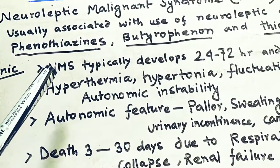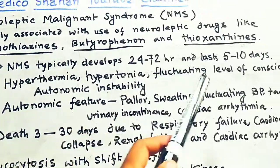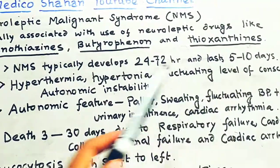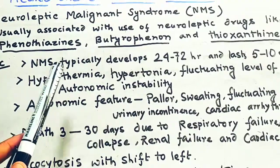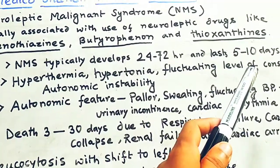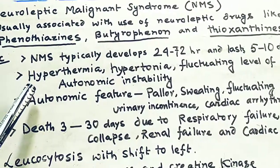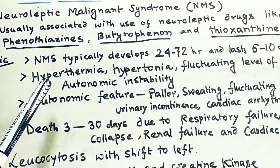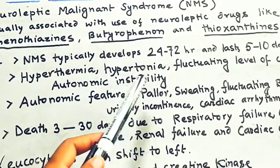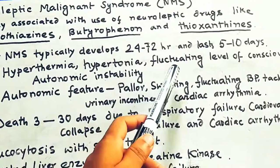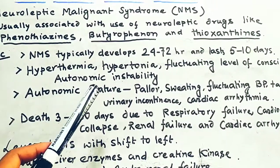In the clinic, NMS typically develops within 24 to 72 hours and can last from 5 to 10 days. The patient presents with typical symptoms like hyperthermia — an increase in temperature — hypertonia in the muscles, fluctuating levels of consciousness, and autonomic instability.